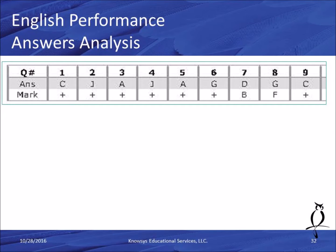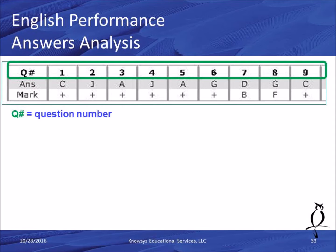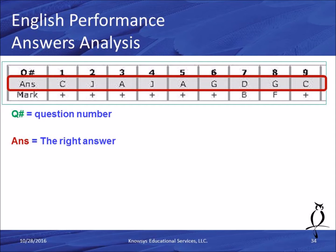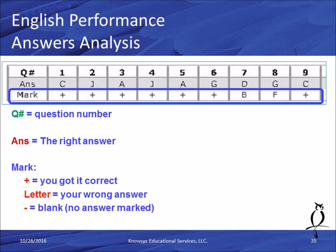Look on your report just below where it says Answers Analysis. The Q number tells you the question number within that section. The ANS row is the right answer for each question. The third row is the Mark — this is the grading of your exam. If you got the question right there's a plus; if you missed it, the letter you selected appears; and if you skipped it, there will be a dash.